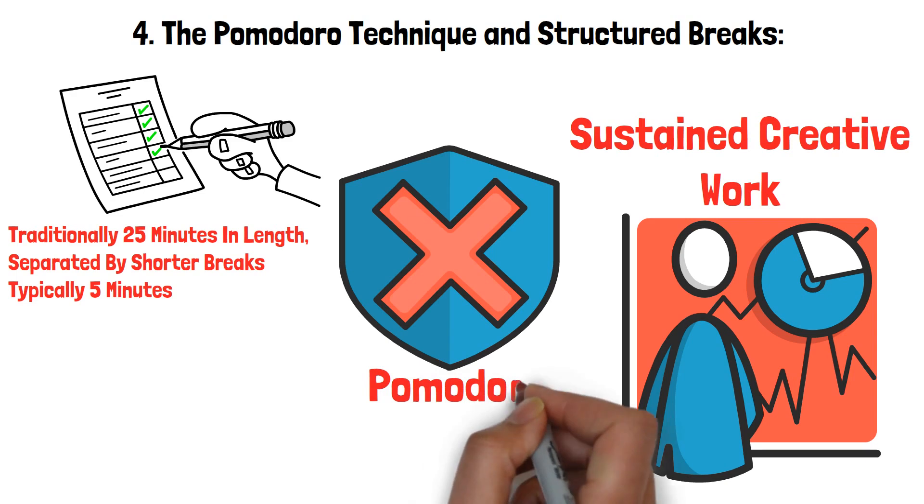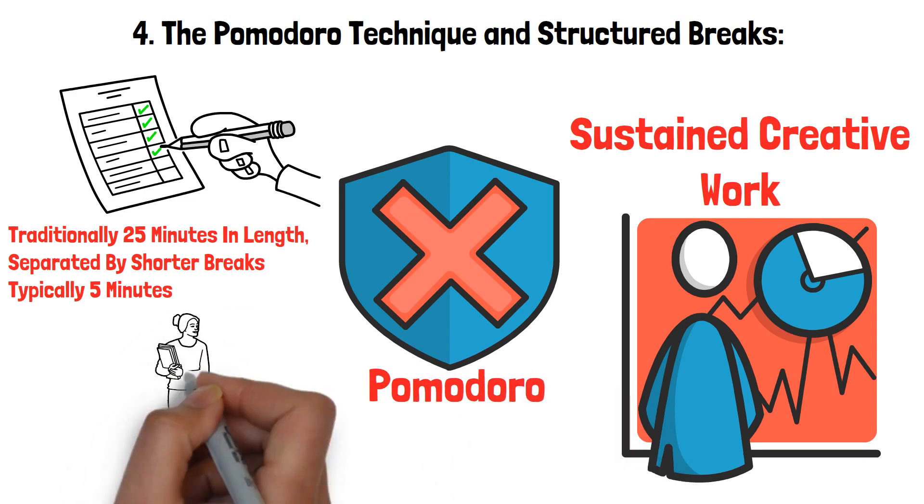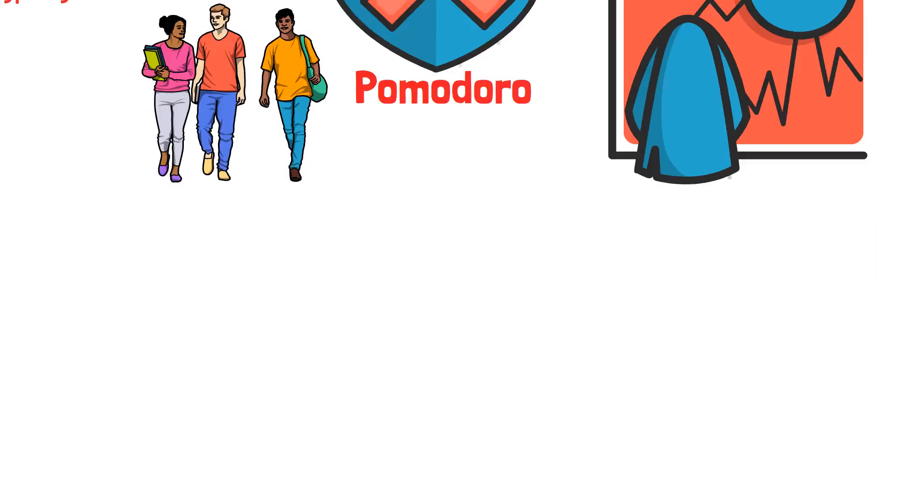Each interval is called a Pomodoro, after the tomato-shaped kitchen timer that Francesco Cirillo used as a university student.